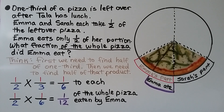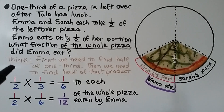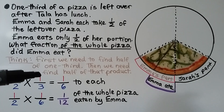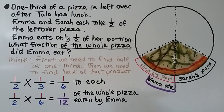Half of one-third is one-sixth, and half of one-sixth is one-twelfth. Notice what the numerators and denominators are doing: going straight across, one times one equals one. For the denominators, two times three is six — multiply straight across the top to get the numerator, and straight across the bottom to get the denominator.